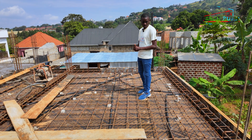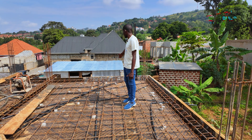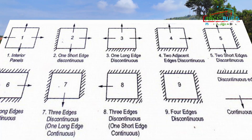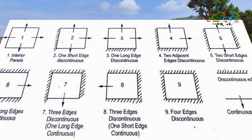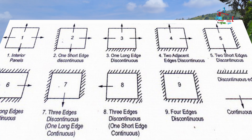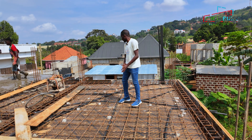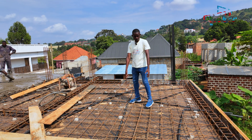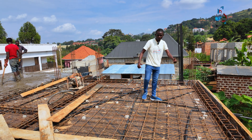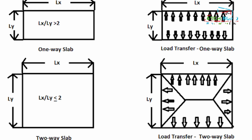In the solid slab design, the program will ask what is the condition for each side — discontinuous or continuous. These two edges are discontinuous, and these two are continuous. The solid slab transfers loadings in four directions. So we will have loadings going to this beam, half loadings going to this beam, half loadings going to this beam, and half loadings going to this beam. That is why it is one of the most effective slab types we use in the design of structures.